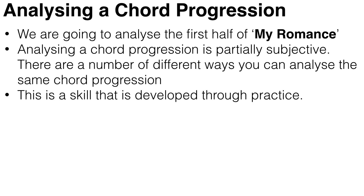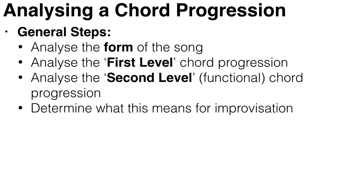Unfortunately, learning how to analyze a chord progression well only comes with practice — there are certain patterns and clichés that you discover only by analyzing lots of different jazz standards. The general steps I take are: first, analyze the overall form of the song; next, analyze the first level chord progression, looking at each individual chord as a separate entity; then analyze the second level chord progression, which focuses on functionality and only the structurally important chords, ignoring passing chords.